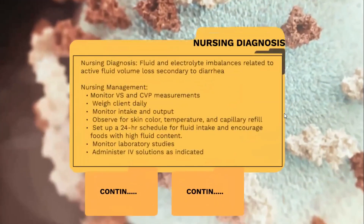The first nursing diagnosis is fluid and electrolyte imbalance related to active fluid volume loss secondary to diarrhea. Nursing management includes monitoring vital signs and CVP measurements, weighing clients daily, monitoring intake and output, observing skin color, temperature, and capillary refill, setting up a 24-hour schedule for fluid intake, encouraging foods with high fluid content, monitoring laboratory studies, and administering IV solutions as indicated.